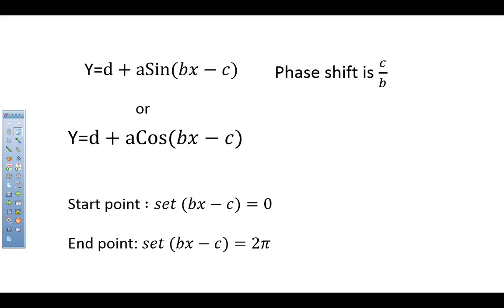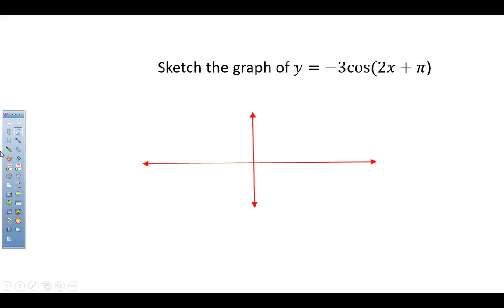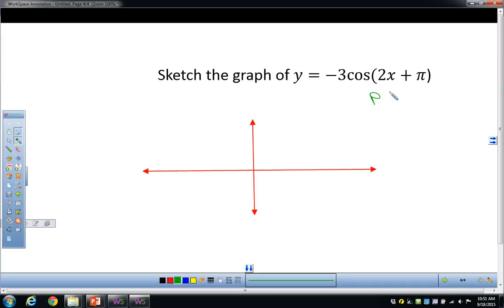We're going to sketch the graph of sine of pi·X minus pi over 2. The phase shift is C over B. This is B (pi) and this is C (pi over 2), so the phase shift is pi over 2 divided by pi.